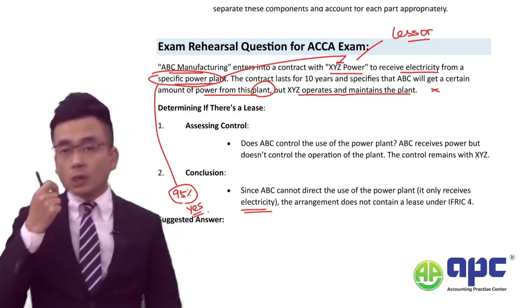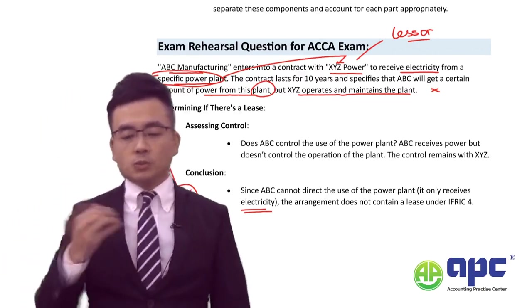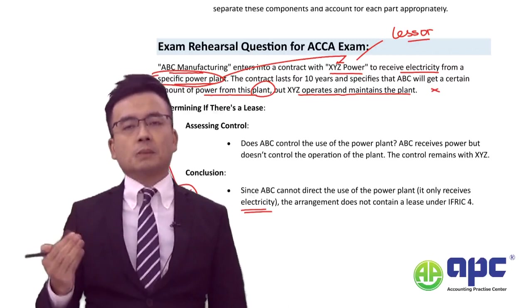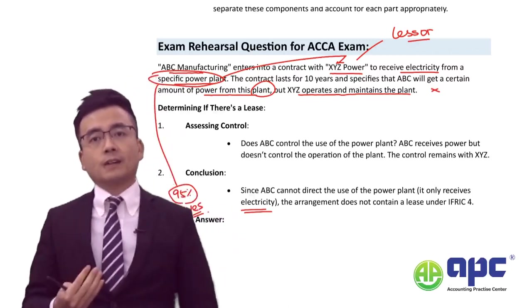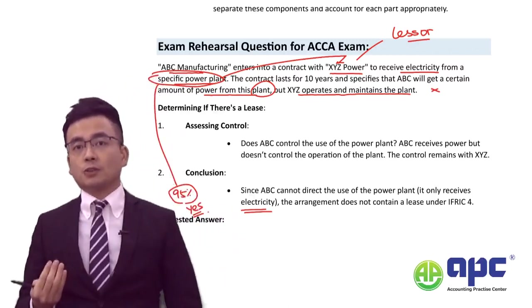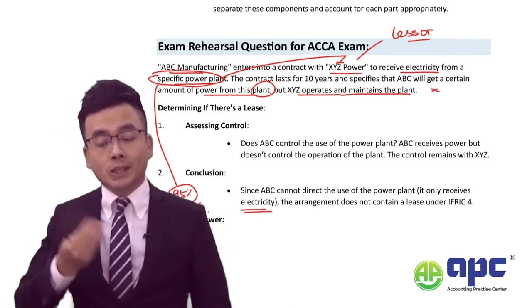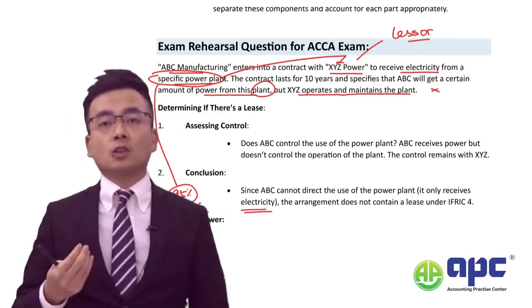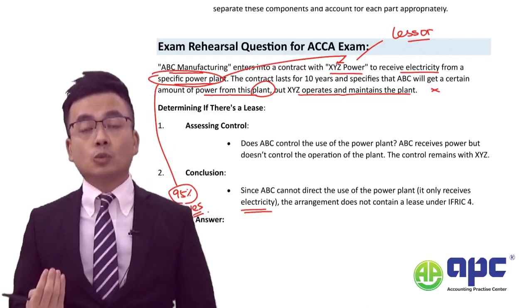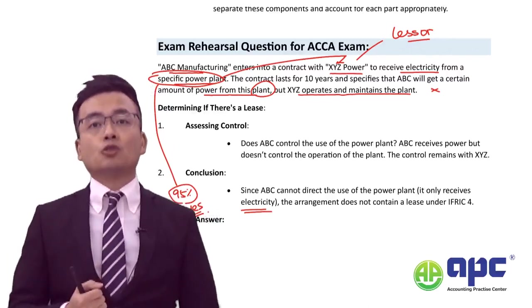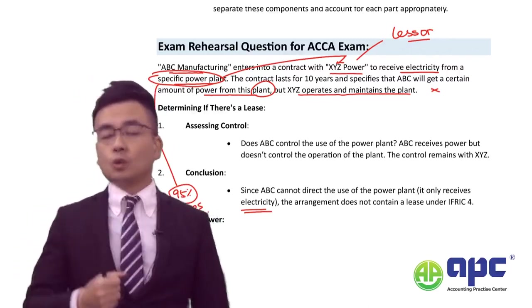Therefore, from a lessee's point of view — from ABC Manufacturing's perspective — we cannot recognise a right-of-use asset or a lease liability. What we can do is recognise the associated rental expenses paid each year when using the service.